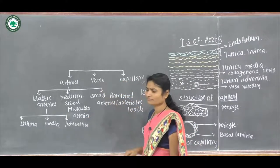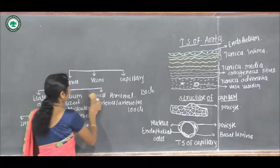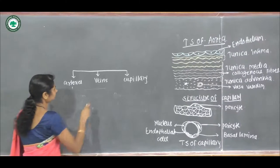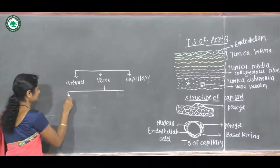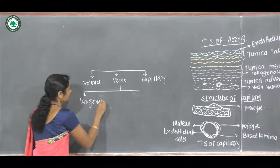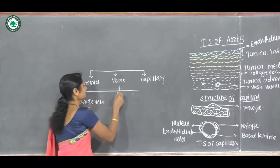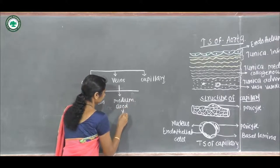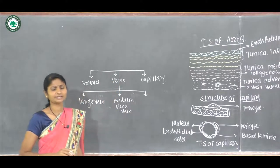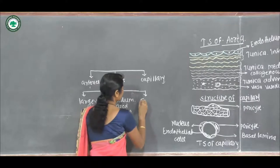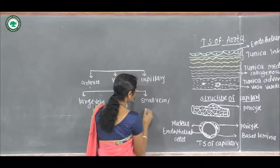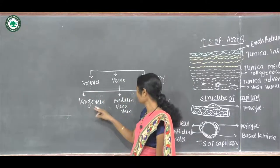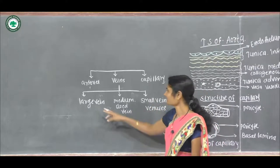The next blood vessel type is veins. Veins are again divided into three parts: large veins, medium-sized veins, and small veins or venules.